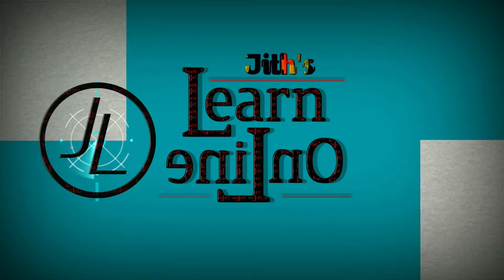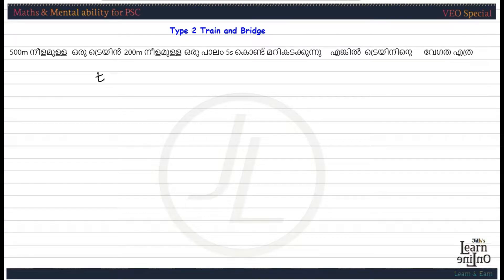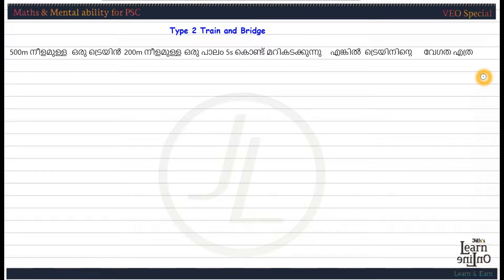Let's talk about the type 2 problem. The type 2 problem is that the train is passing a tree or a platform. In type 1, the train is passing a tree or a tree. This is the type 2 problem.